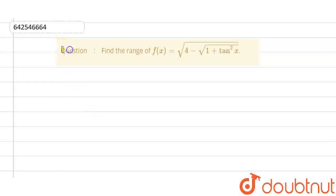Question that was given to us was find the range of the function f(x) is equal to square root of 4 minus square root 1 plus tan squared x.